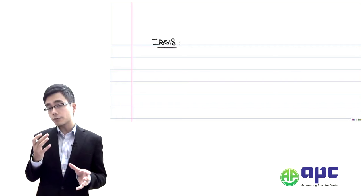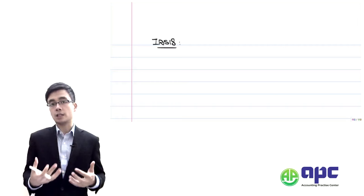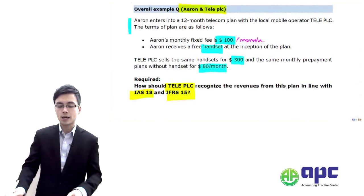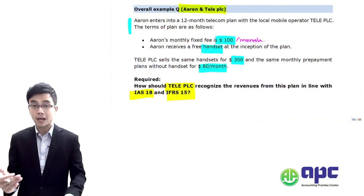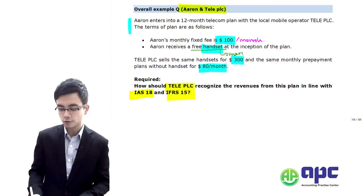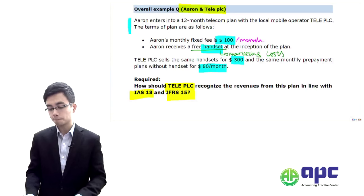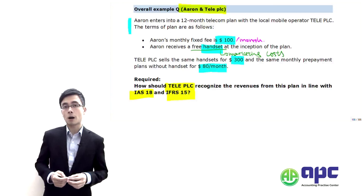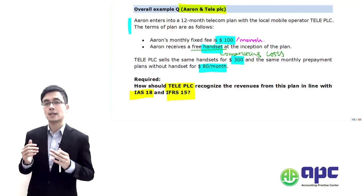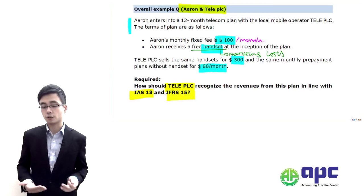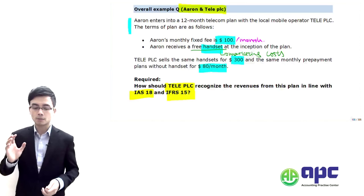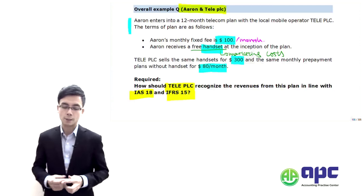If the mobile phone has been delivered to Errant the customer, under IFRS number 18, practically speaking, we normally treat this free-of-charge handset as a marketing cost. So if the cost for the mobile phone is, say, $30, the company should debit the marketing expense and credit cash of $30 for the cost of the mobile phone which is free of charge — despite the same price being $300.